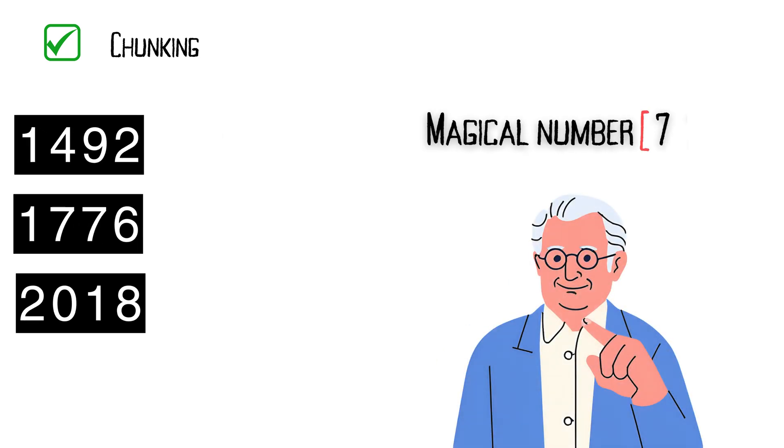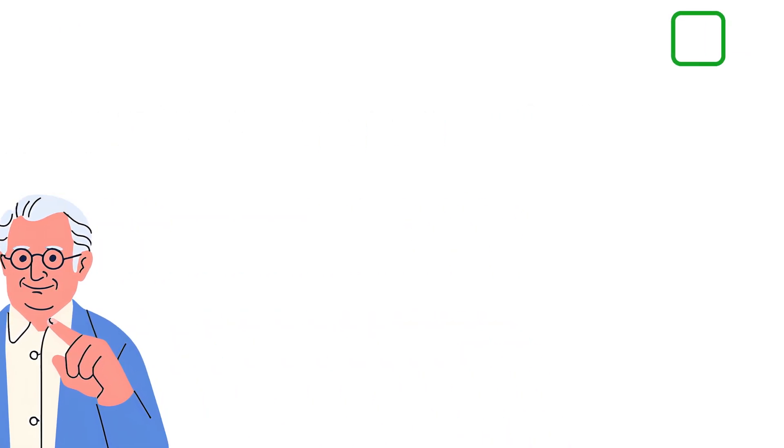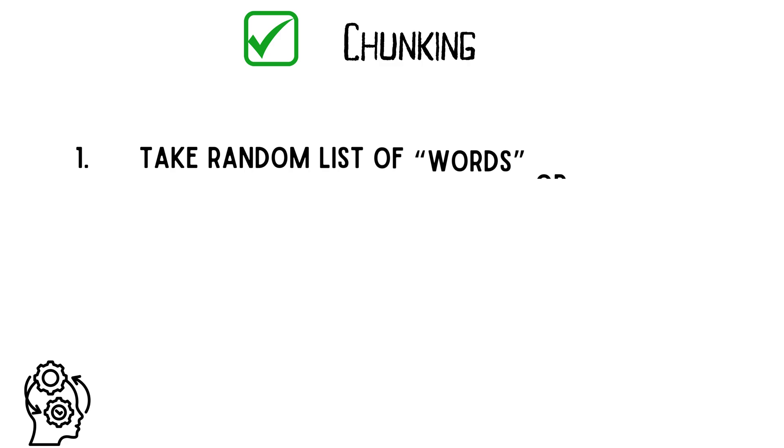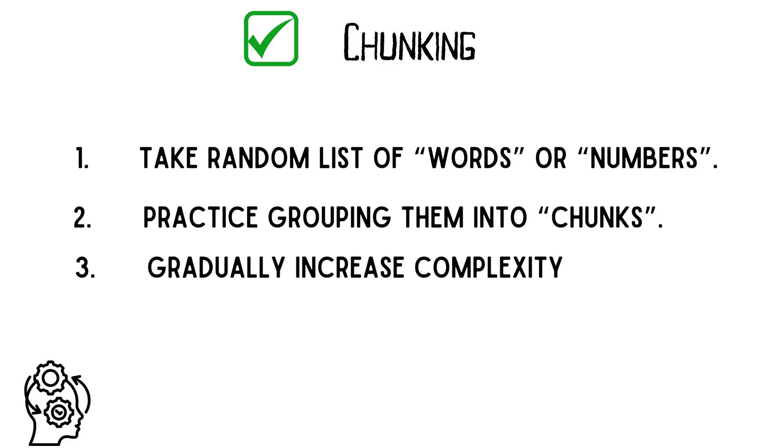This ties in perfectly with George Miller's theory of the magic number seven, which suggests that the average person can hold about seven, plus or minus two items, in their short-term memory. So when you're chunking information, aim for around seven pieces in each group. Here's a practical exercise to improve your chunking skills. Take a random list of words or numbers and practice grouping them into meaningful chunks. Start with simple lists and gradually increase the complexity as you become more comfortable with the technique.